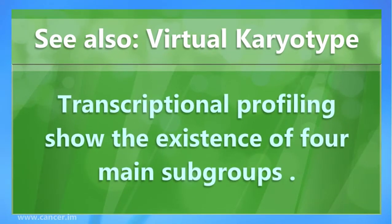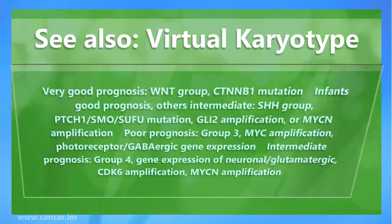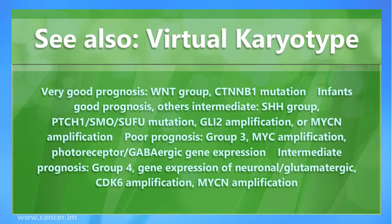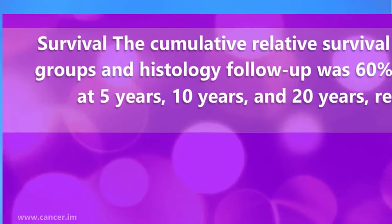Excellent prognosis subgroups include 6q and 17q balanced or 6q deletion. Transcriptional profiling shows four main subgroups: very good prognosis WNT group with CTNNB1 mutation; good prognosis SHH group with PTCH1/SMO/SUFU mutation, GLI2 amplification, or MYC amplification; poor prognosis Group 3 with MYC amplification and GABAergic gene expression; and intermediate prognosis Group 4 with neuronal glutamatergic gene expression, CDK6 amplification, or MYC amplification.